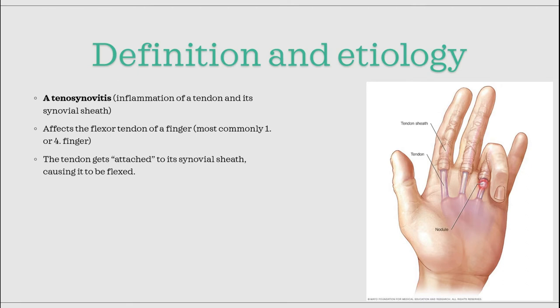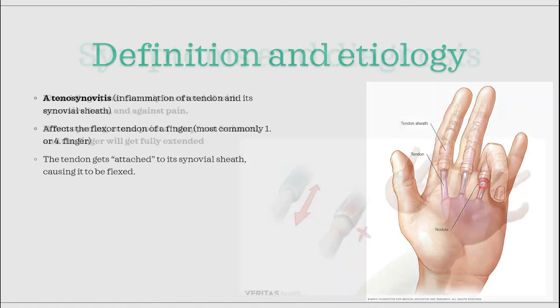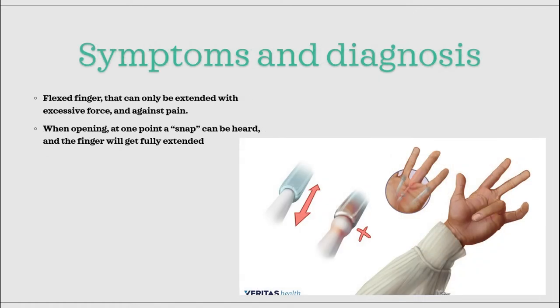When the flexor tendon and its synovial sheath get swollen and inflamed, they can get attached to one another. When this occurs, the finger goes into a flexed position and it can be very hard to extend it again. The classical trigger finger is seen when a finger is locked in a flexed position. The finger can be extended, but in order to do so you must use excessive force and it can be quite painful.